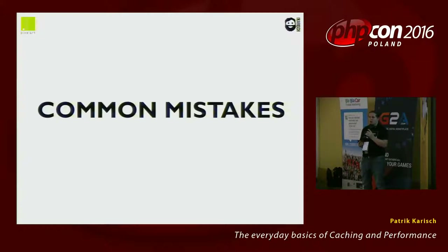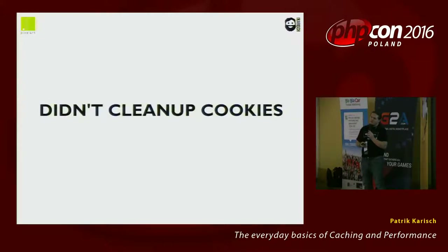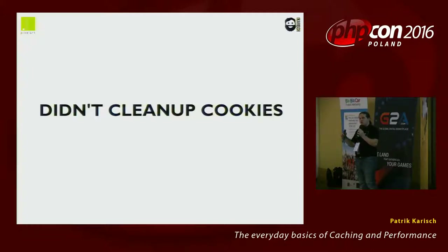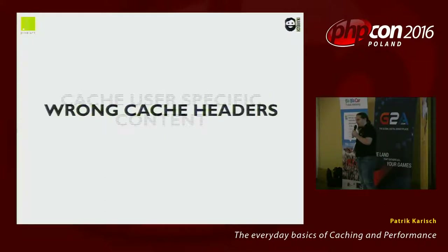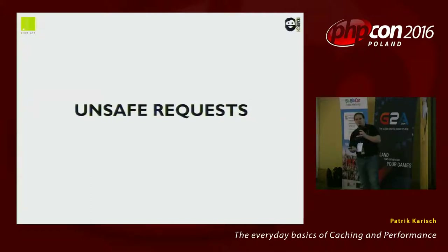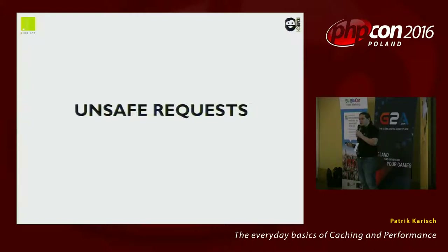There are also common mistakes when using a reverse proxy. You didn't clean up cookies — for example, Varnish in its default config won't cache if the browser sends a cookie, so you have to clean up cookies and maybe forward only one or two cookies used in the hash calculation to the backend. Please don't cache user-specific content — don't cache credit card data of a user in your reverse proxy, otherwise every user will see that credit card data. And wrong cache headers: if you send 'public' to a private request, that's the wrong cache header. Unsafe requests — POST, PUT, etc. — shouldn't be cached. Varnish in default config won't cache any such request, but if you have an error in your config you may accidentally cache POST requests, and that's bad.